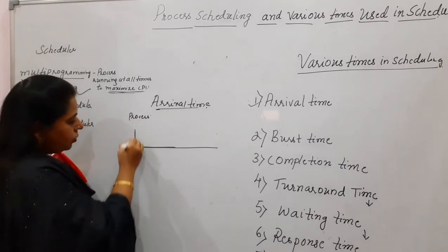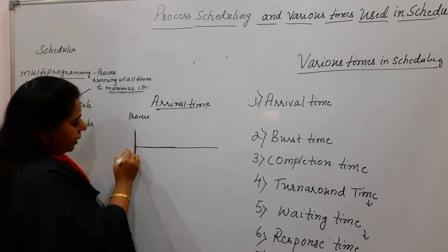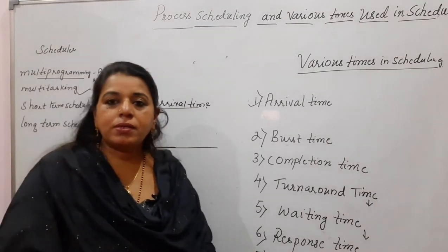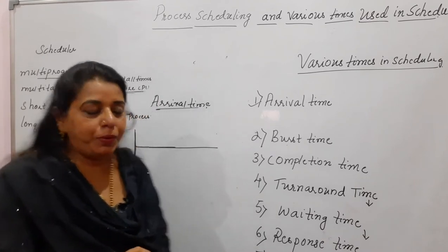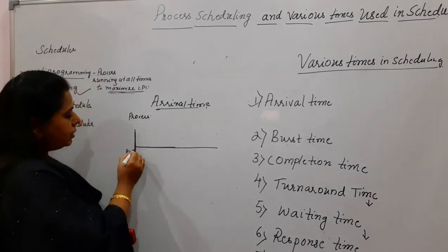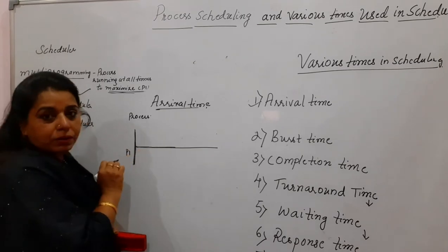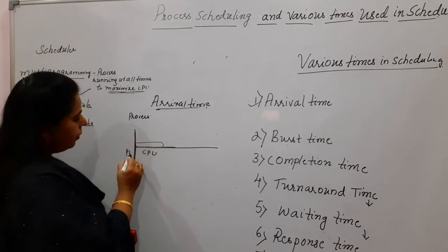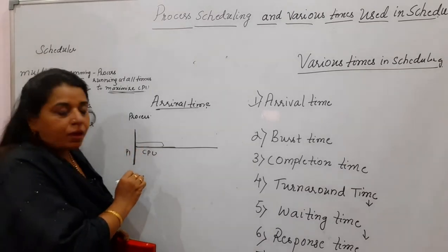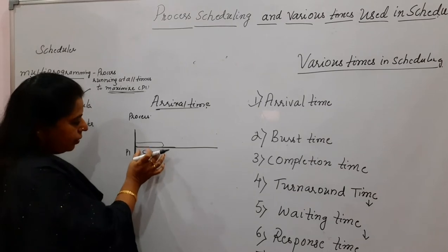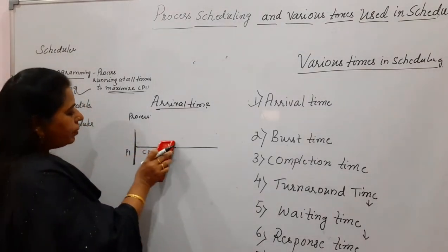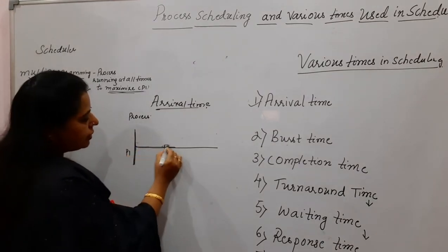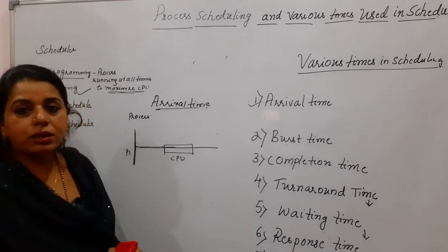The process has come to the system and is at the entry point. Once it enters the system, the process expects to get execution, which requires the CPU. Once the process enters, it expects the CPU to be assigned to it. The process may get the CPU immediately, or sometimes it may not get the CPU immediately and has to wait — that waiting duration is the waiting time — and then it gets the CPU for execution.